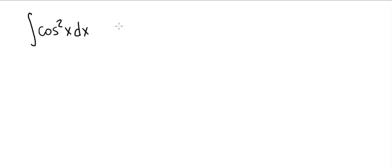We're going to need several things to make the evaluation as easy as possible. First, the following trigonometric identity: cosine squared of x is equal to 1 half times 1 plus cosine of 2x.